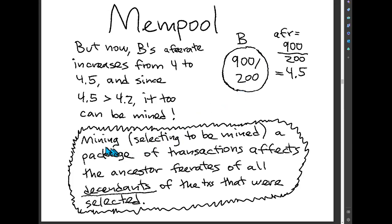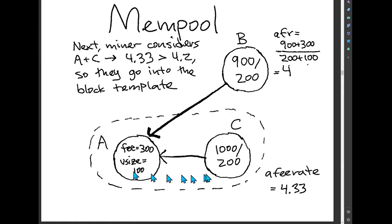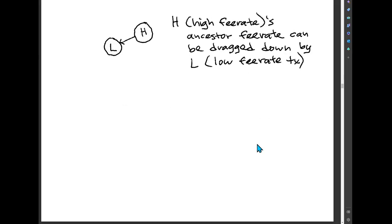The main point here is that mining or selecting a package of transactions affects the ancestor fee rates of all descendants of the transactions that were selected. In this case, by selecting A and C, B's ancestor fee rate changed because B is a descendant of A. If A or C had other descendants not shown here, all of their ancestor fee rates could change as well.